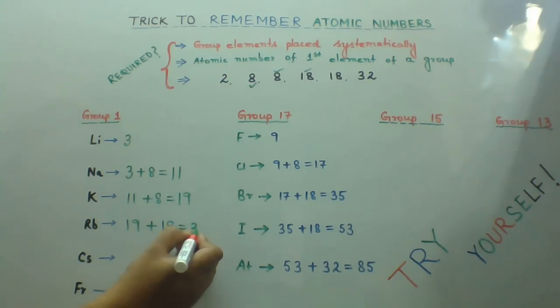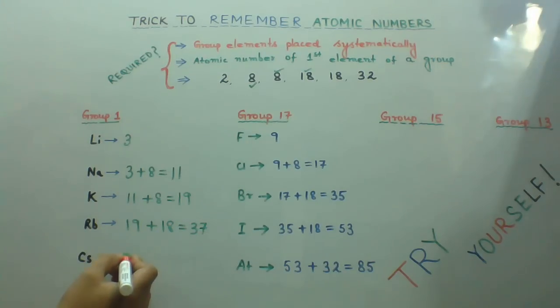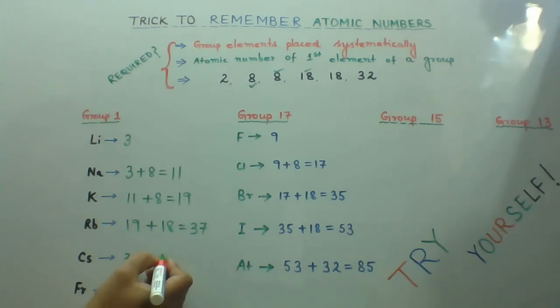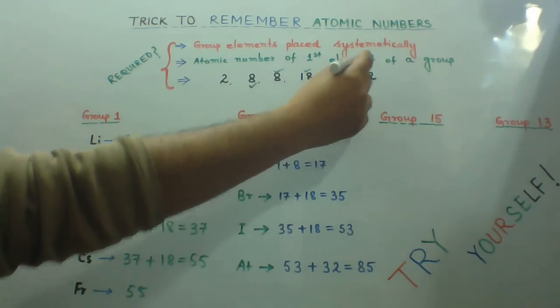This will be 37. Bring this 37 down, add 18, it will be 55. Now bring this 55 down, add 32.